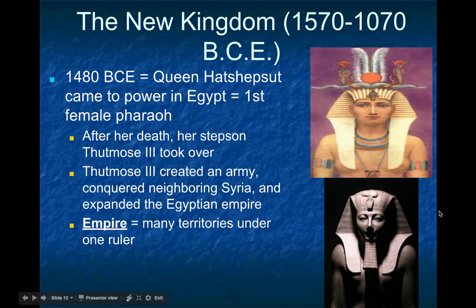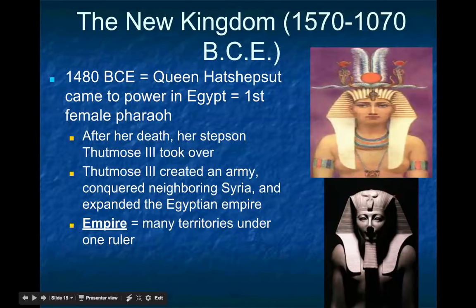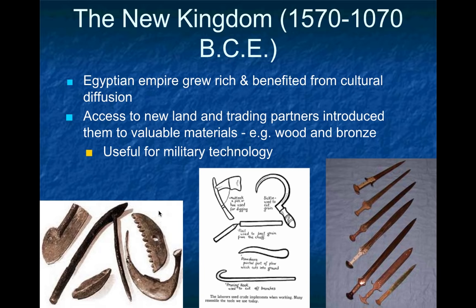Hatshepsut died under mysterious circumstances — many believe her stepson Thutmose, who became the next pharaoh, had her killed. When Thutmose took her place, he created a large army and expanded the size of the New Kingdom, conquering Syria and further expanding the Egyptian empire. The empire became quite rich because it occupied such a large area and had access to a wide range of natural resources, including wood and bronze — some of the most popular materials for creating military and agricultural technology, like mallets, plows, and sickles — which allowed the Egyptians to improve their agricultural technology.